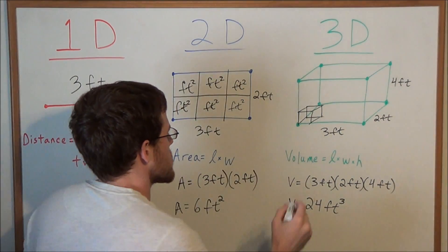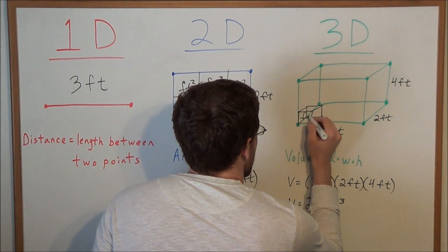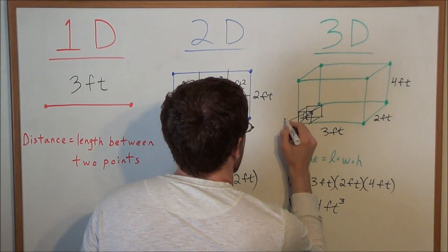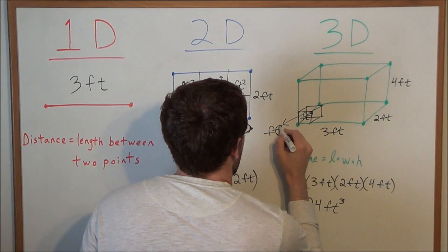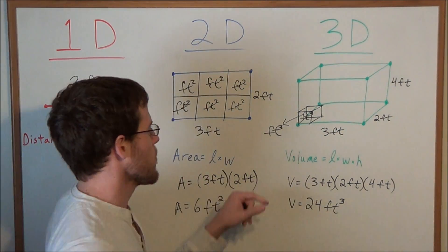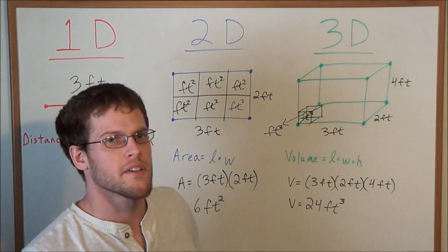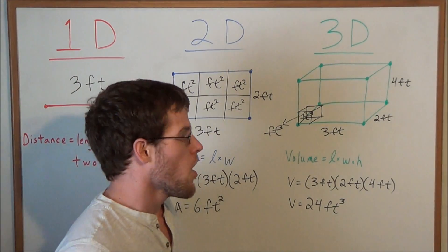This is how we would measure volume — this would be a cubic foot, and we could fit 24 of them inside of this rectangular prism.